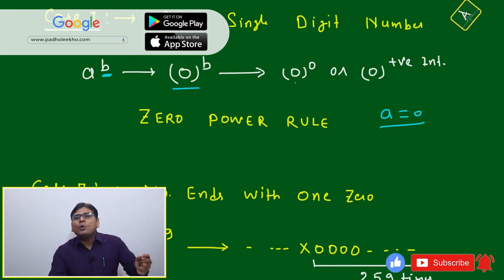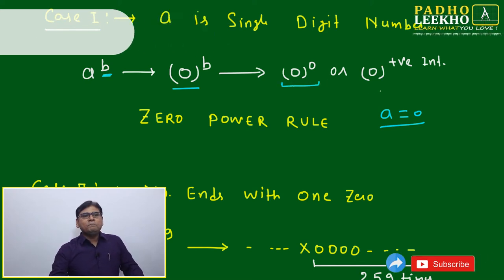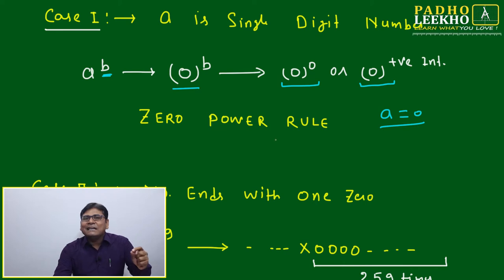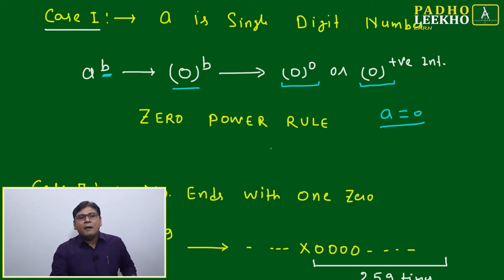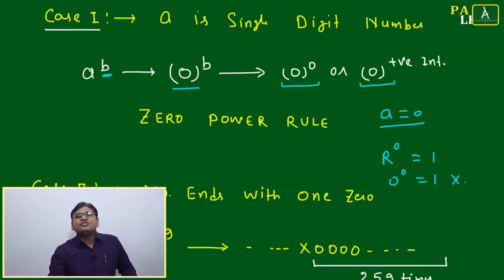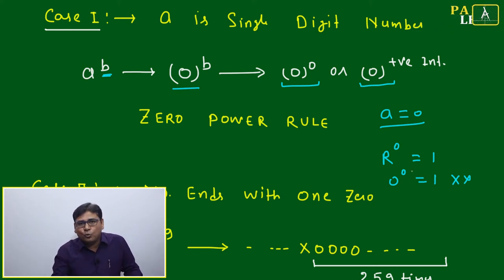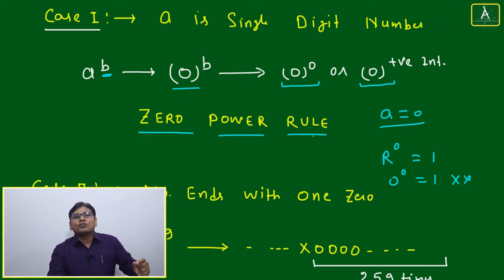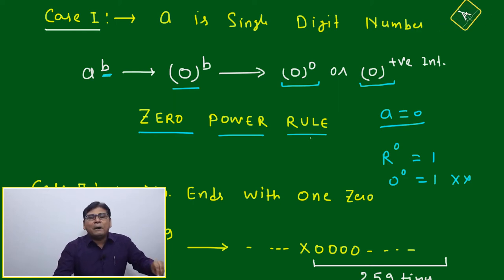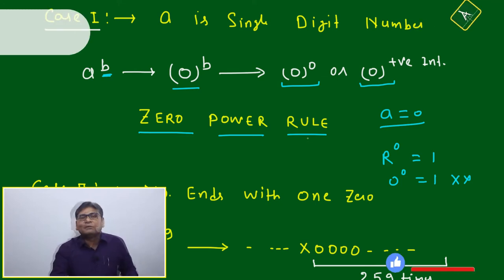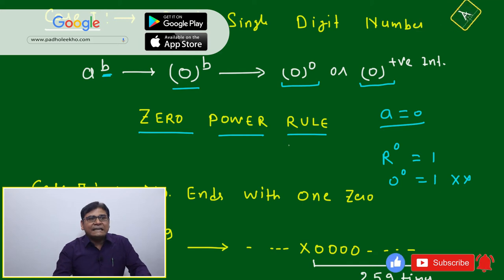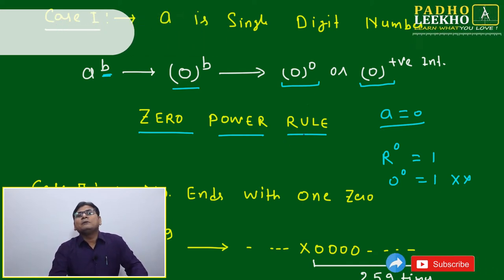If A equals 0, you are raising it to a positive integer power: 0 to the power B. Two formats arise — 0 to the power 0, and 0 to the power of a positive integer. Both are mathematically confusing. We know any real number to the power 0 equals 1, but 0 to the power 0 is not equal to 1 — it is undefined. This is one of the contradictions of mathematics. For now, consider 0 to the power 0 as undefined or infinity.